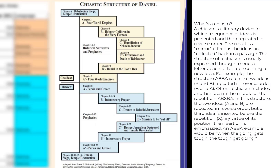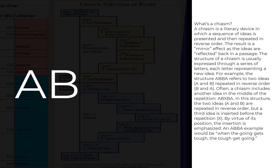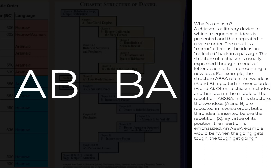The result is a mirror effect as the ideas are reflected back in a passage. The structure of a chiasm is usually expressed through a series of letters, each letter representing a new idea. For example, the structure A-B-B-A refers to two ideas, A and B, repeated in reverse order, B and A.